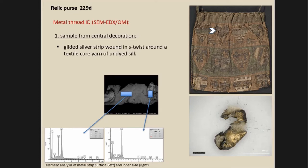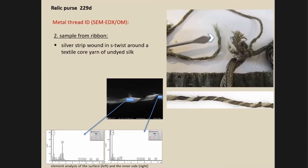We were allowed to take two sample ends from metal threads: one from the central decoration and one from the ribbon. Using SEM-EDX, the first sample was identified as a gilded silver thread — a strip wrapped around a core of undyed silk. The second sample, taken from the end of the ribbon, was found to be a silver strip, not gilded, also twisted around a silk core. But these were the only two samples we could take, so we were not sure if the same metal thread was used throughout the entire decoration.